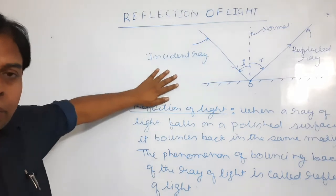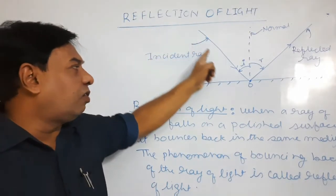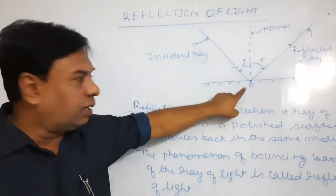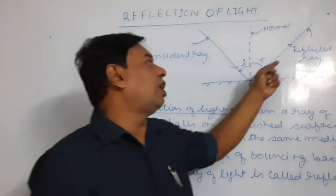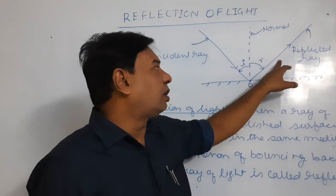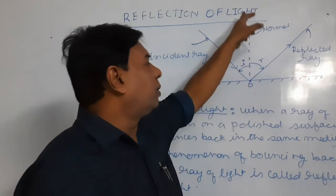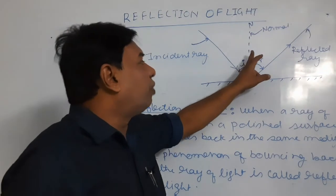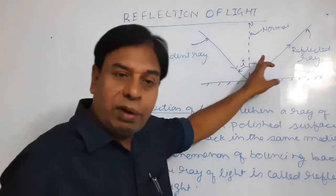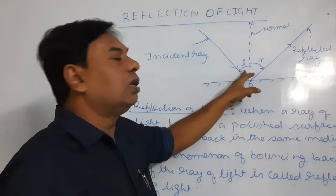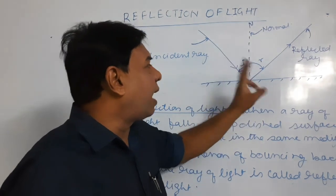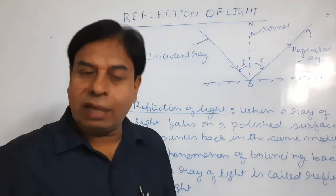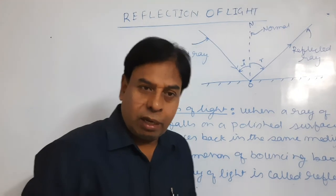The incident ray of light falls on the mirror surface — that is the polished surface — at point O, which is the point of incidence. After falling, it reflects back in the same medium as the reflected ray, along the normal ON. The angle from the normal to the incident ray is called the angle of incidence, and the angle from the normal to the reflected ray is called the angle of reflection.